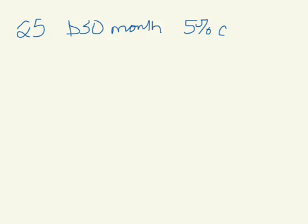For the next problem, at age 25 you decide to save for retirement. You deposit $30 at the end of each month. It pays 5% compounded monthly and you're retiring at age 65.